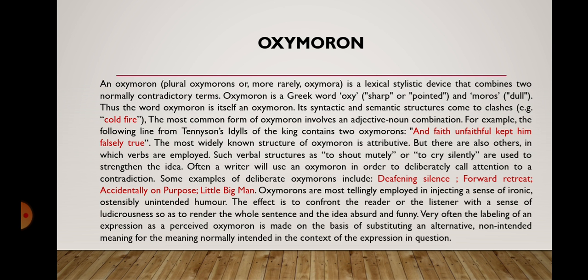An oxymoron is a lexical stylistic device that combines two normally contradictory terms. Oxymoron is a Greek word: 'oxy' means sharp or pointed, and 'morous' means dull. Thus, the word oxymoron is in itself an oxymoron — its syntactic and semantic structures come to clashes. For example, 'cold fire.' The most common form of oxymoron involves an adjective-noun combination. From Tennyson's Idylls of the King: 'And faith unfaithful kept him falsely true' — containing two oxymorons. The most widely known structure of oxymoron is attributive, but verbal structures such as 'to shout mutely' or 'to cry silently' are also used.